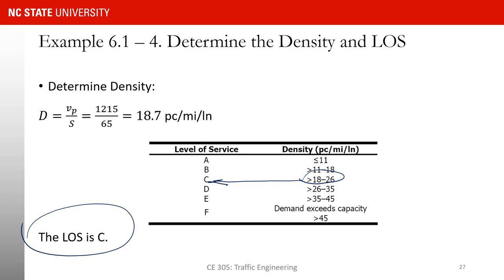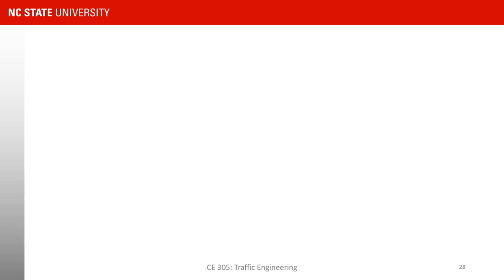This example concludes our discussion on chapter 6, highway capacity and level of service analysis. Midterm exam 2 will cover everything from chapters 5 and 6. From the next class we will start talking about signalized intersections — how to analyze them and determine level of service. Have a good one.